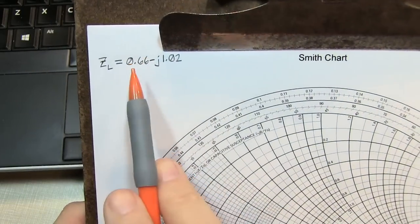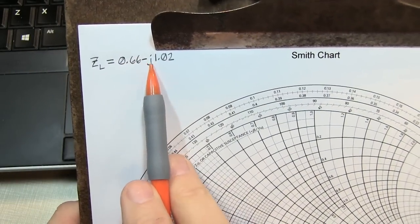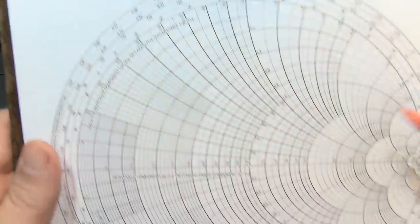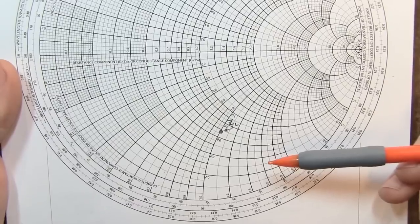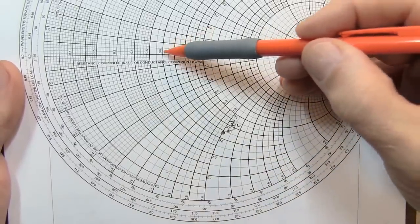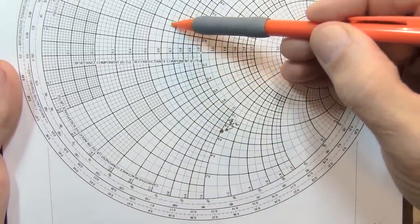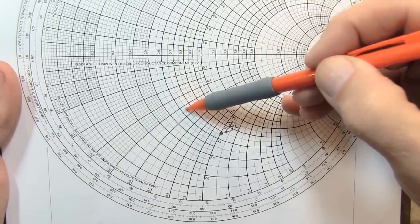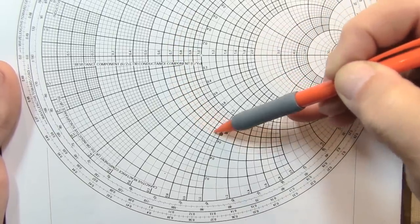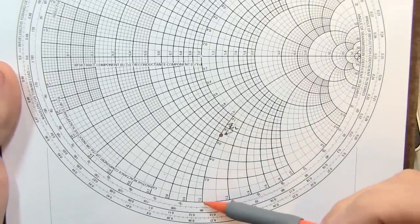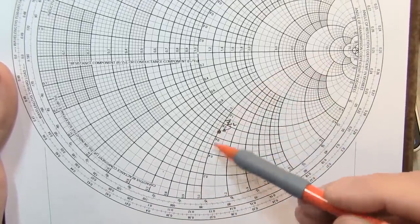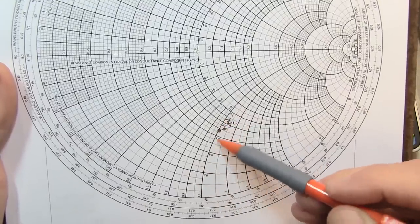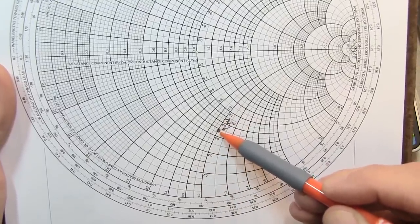Let's plot 0.66 minus J1.02 on the Smith chart. Being negative J, being capacitive, we're in the lower half of the Smith chart. We start with the 0.66 real component, which is right next to this line here, then look at the intersection of 1.02 on the capacitive side of the reactance scale. That plots us right here.